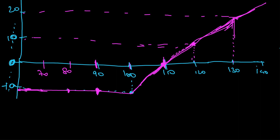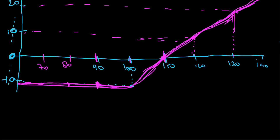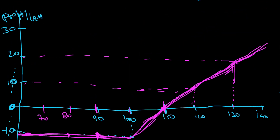That's why the line is drawn flat at minus 10 for all prices below 100. As the price keeps going up, the graph also keeps going up. This is the payoff for call options.